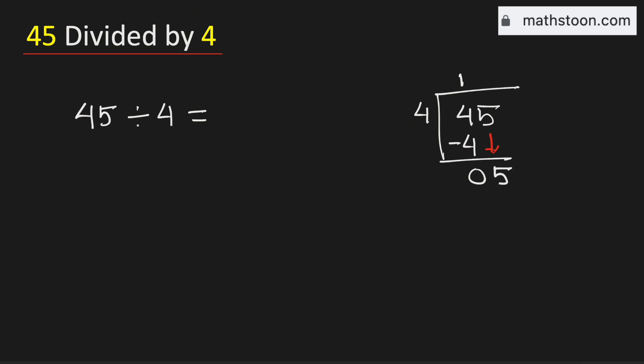We know that there is no meaning of zeros on the left, so we will remove it. Now 4 times 1 is 4. Now subtract, we get 1.